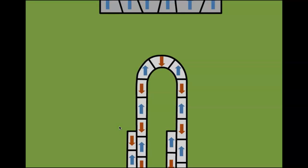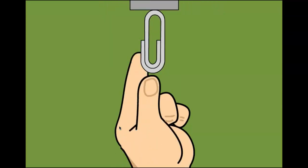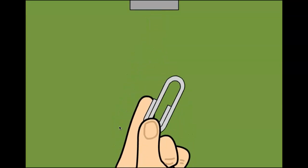The magnetic field temporarily lines up the magnetic domains in the paperclip, so it becomes a magnet too. Magnetic fields get weaker the further away from the magnet you go. So, if the paperclip is too far away, the magnet can't pull it in.